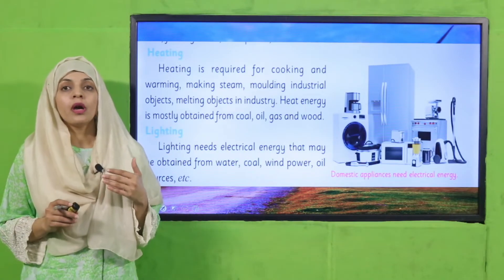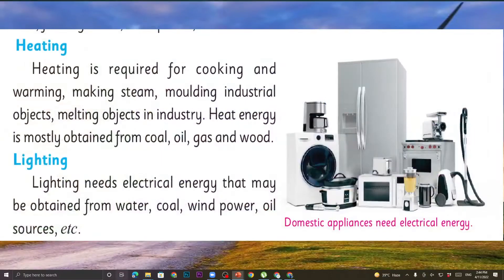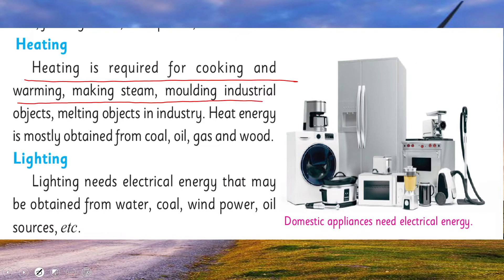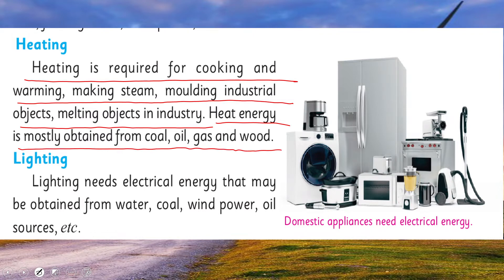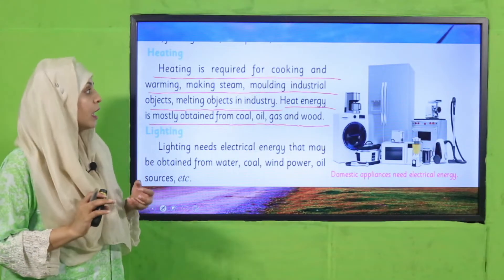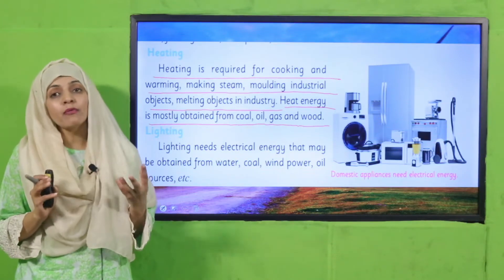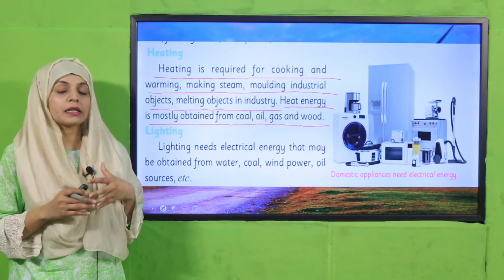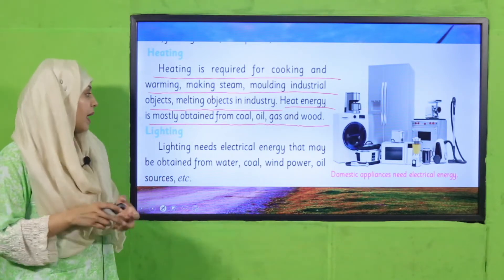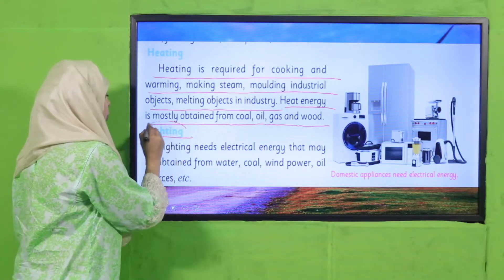Next is heating. Energy also provides heat. Heating is required for cooking and warming, making steam, molding industrial objects, and melting objects in an industry. Heat energy is mostly obtained from coal, oil, gas, and wood. These sources are used both in industrial purposes and domestically.